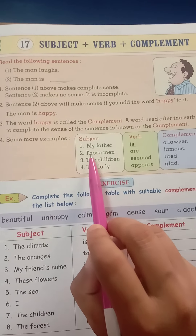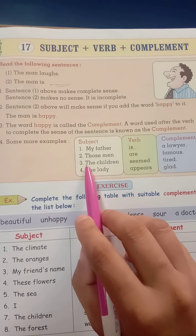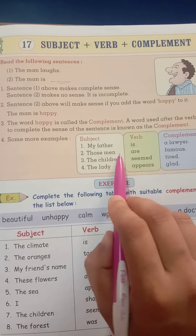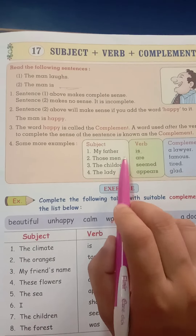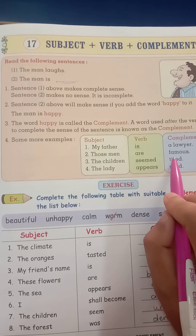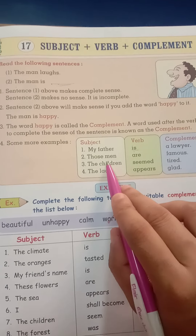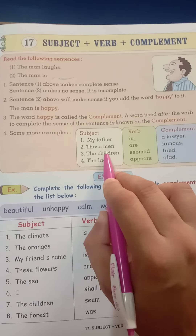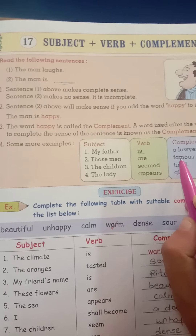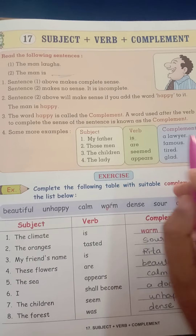Second example: 'Those men are famous.' Now, who are they talking about? Men — those men. And the verb is 'are.' Now, what about men? We are saying that they are very famous. So 'famous' will be my complement.